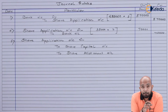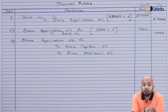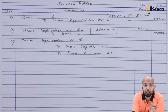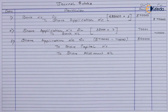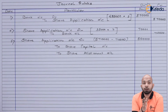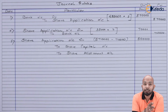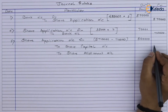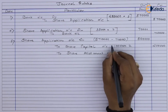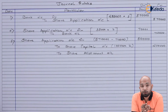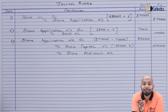The entry passed: Share Application Account Dr. to Share Allotment and to Share Capital. Share Application total is ₹5,70,000 minus ₹70,000 = ₹5,00,000 net. Share Capital refers to 1 lakh shares × ₹2 = ₹2,00,000. The balance of ₹5,00,000 minus ₹2,00,000 = ₹3,00,000 is available for adjustment against allotment money.